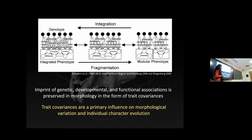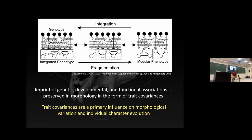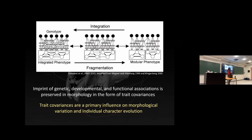The question of how to build development into our understanding of morphological evolution when you can't directly access development got me interested in the field of morphological integration and modularity. The basic idea is that phenotypes — or the covariance structure underlying trait relationships — can be either entirely integrated, or more modular, where different regions of a structure are more highly correlated with each other than between regions. There's an interesting idea that over evolutionary time you go from more integrated to more modular phenotypes to circumvent canalization and gain complexity.